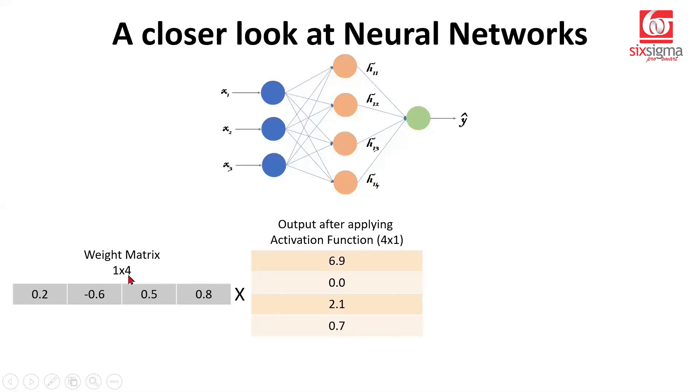This is 1x4 and this is 4x1. Is the multiplication feasible? Yes, the inner dimensions are same, 4 and 4. And what will be the dimensions of the output? It's going to be 1x1 because the outer dimensions will be retained.